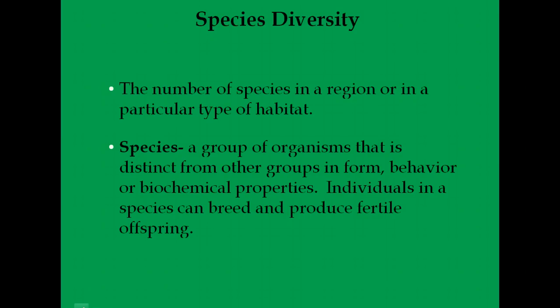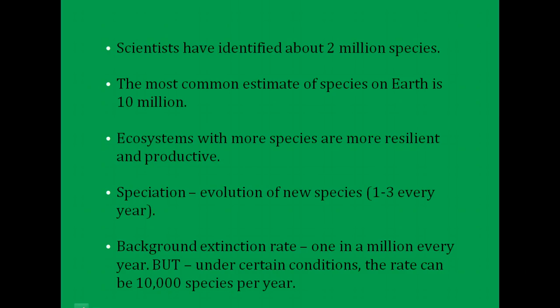Species diversity is simply the number of species in an area. Different individuals in a species breed, produce offspring, and through speciation, more species evolve. So far scientists have identified about 2 million species, and the most common estimate is 10 million total, with possibly as many as 100 million. Even at 10 million, we've only identified one fifth of species. And 99% of every species that has ever been alive is now extinct — yet we still possibly have 10 million species.